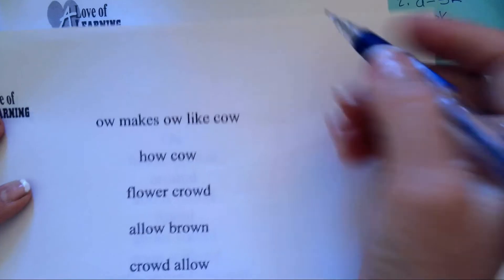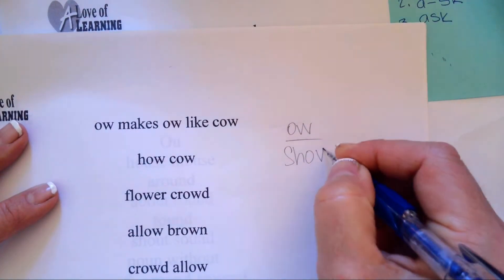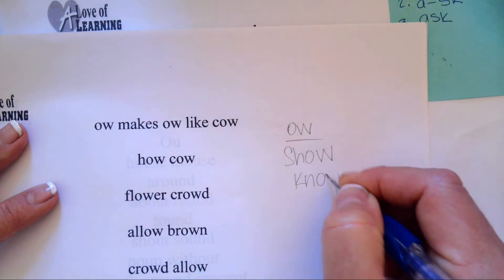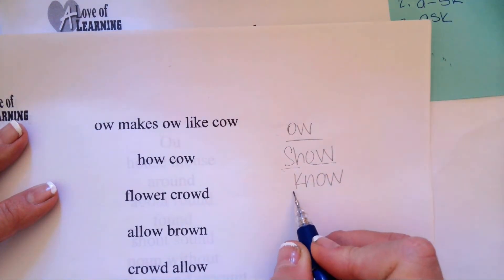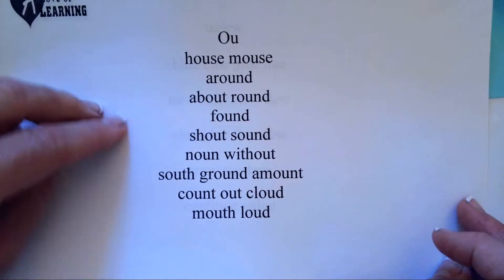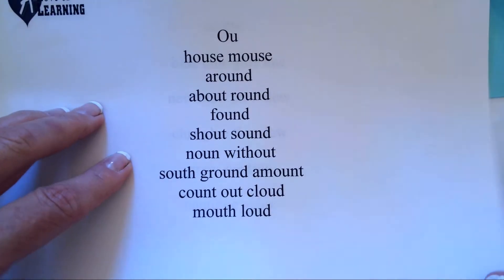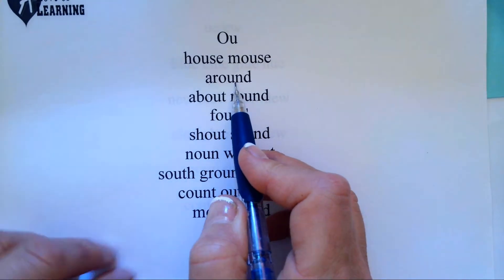O-W also makes O like show. K-N makes N, so this one is sh-O, show. This one is N-O, no. O-U makes ow like house. M-O-U-S-E, mouse. A-R-O-U-N-D, around.